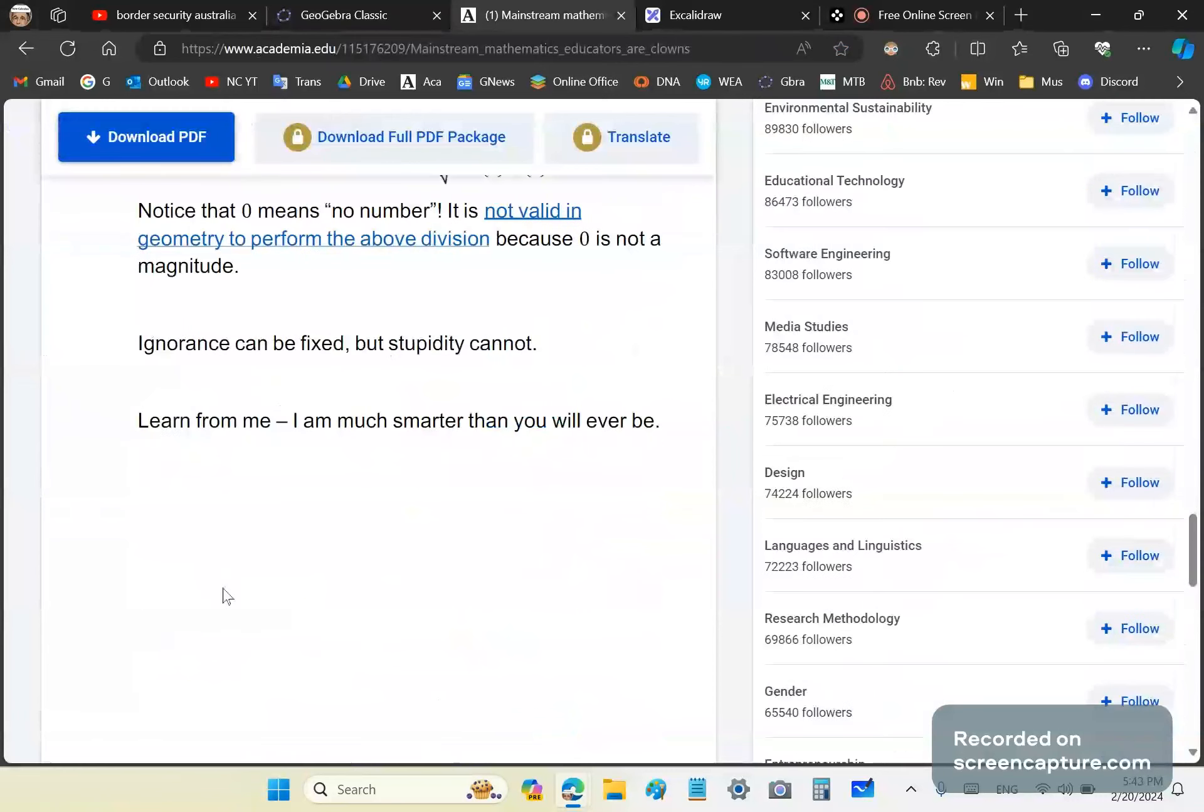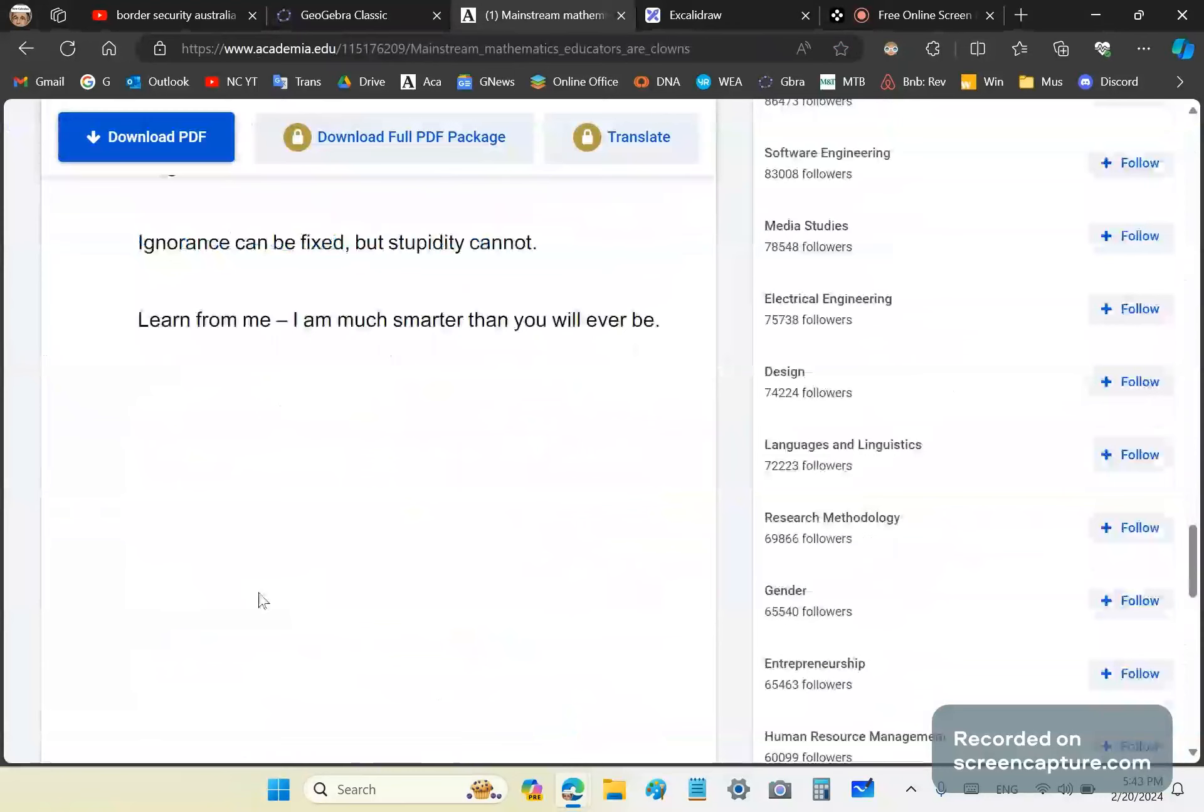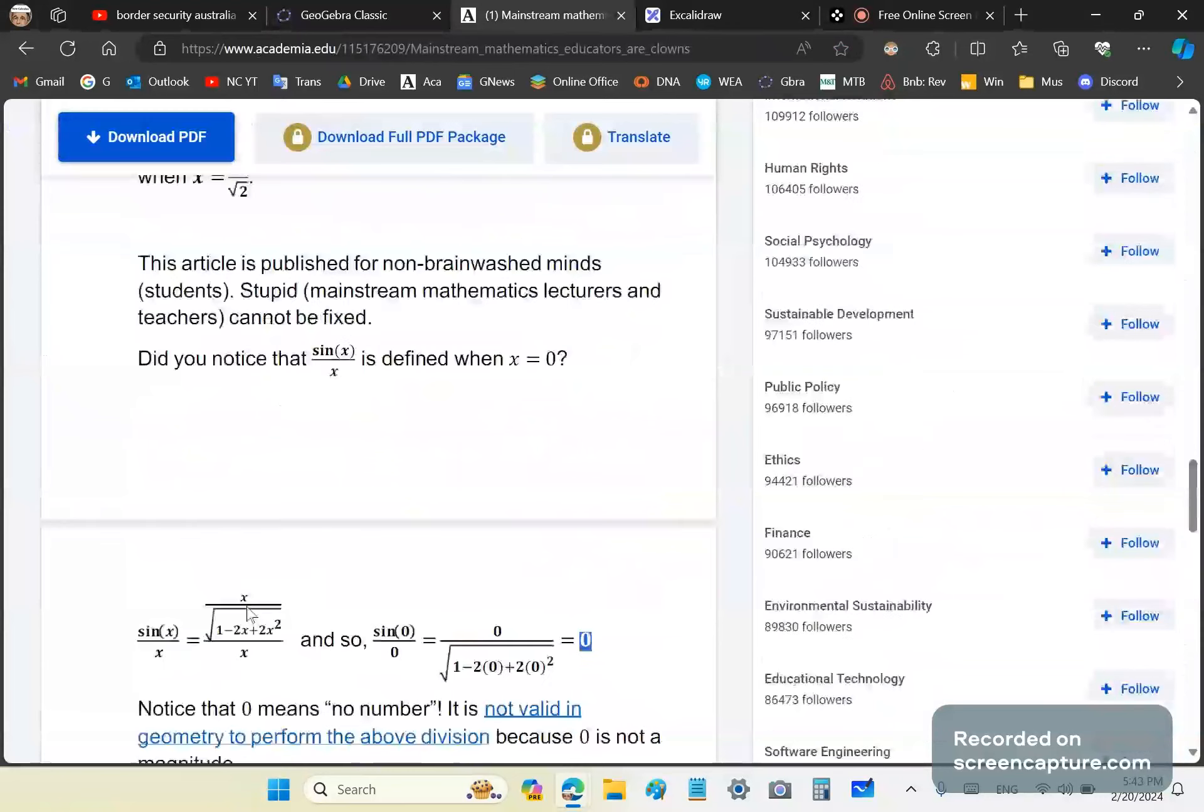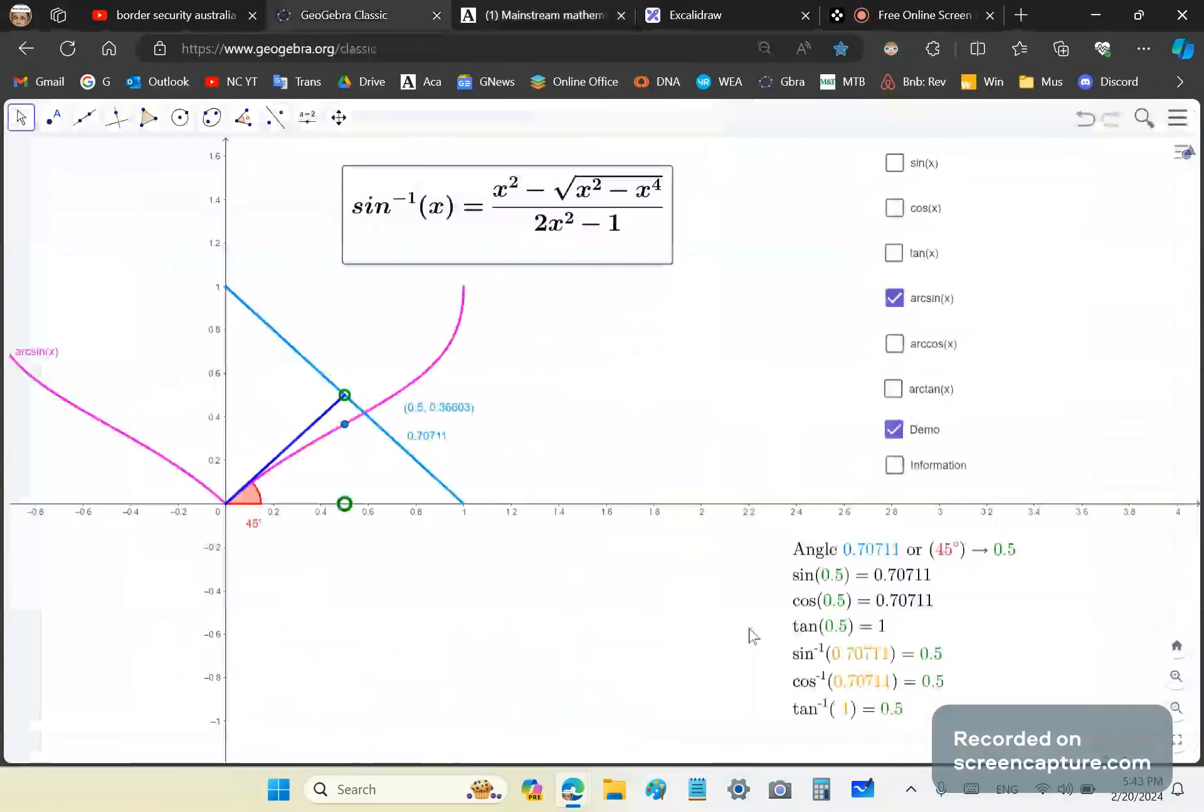So basically you can fix ignorance, but you can't fix stupidity. And there is so much of that in the mainstream. So I wanted to just share this with you. I'll place a link to the articles and the presentation. If you're not already a subscriber, become one, click like. I have many enemies in the mainstream. They would love to see me dead. Basically, I actually get lots of comments saying to me that they'd like to see me dead, but I've got news for them. I'll probably be around for a long, long time still. That's just too bad.